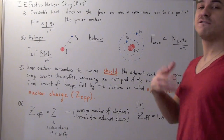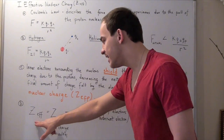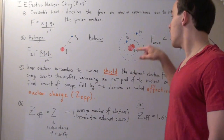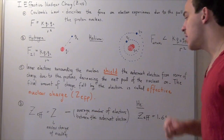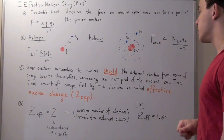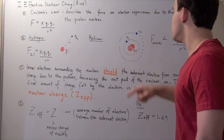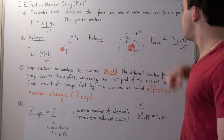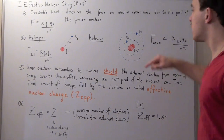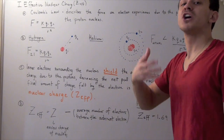We find the effective nuclear charge using the formula: Z_eff equals the actual nuclear charge of the proton nucleus minus the average number of electrons separating the outermost electron and the proton nucleus. For helium, if the nuclear charge is two, then the outermost electron actually feels a charge of 1.69, because we subtract the shielding contribution. So on average, the outermost electron experiences less pull.